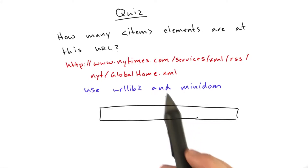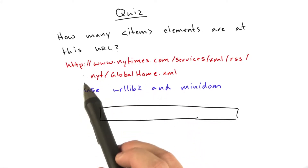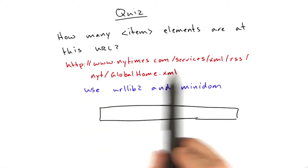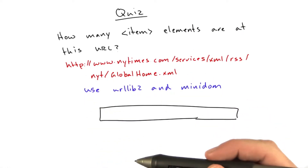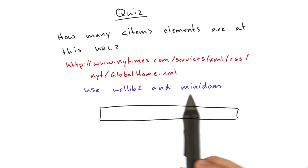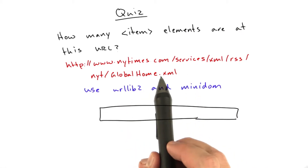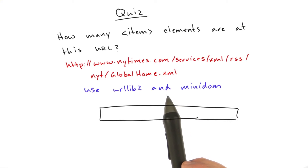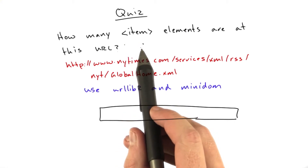The question I'd like you to answer is: go to that URL we were just at, the New York Times RSS listing. Here's the URL — we'll also include this in the notes below so you can copy and paste it. Use urllib and minidom in Python to download this page and tell me how many item elements are in that listing.